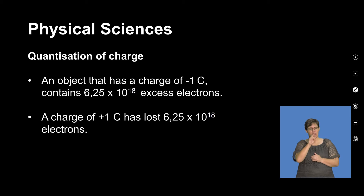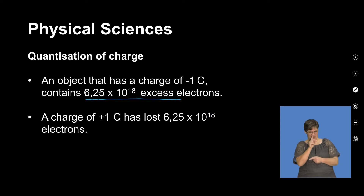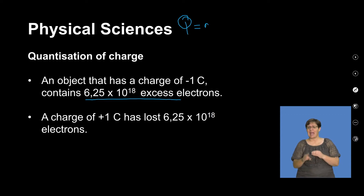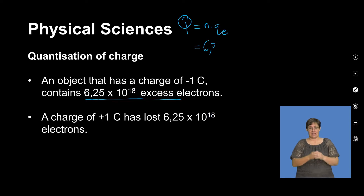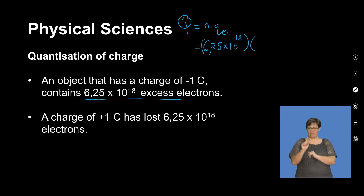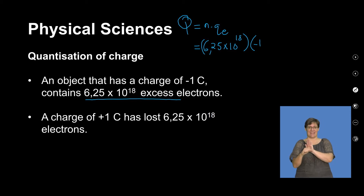An object with a charge of negative 1 coulomb contains a number of electrons in excess. To get a charge of negative 1 coulomb, we must add 6.25 times 10 to the exponent 18 electrons, multiplied by the elementary charge of negative 1.6 times 10 to the exponent negative 19. We say negative because we are adding electrons, and the charge that arises is negative.